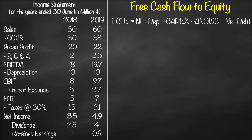We get net income and depreciation from our income statement. We have net income of 4.9 in year 2019, plus depreciation of 10 in year 2019. When we calculate CapEx, change in net operating working capital, and net debt, we need two balance sheets — year 2019 as well as the previous year, 2018.